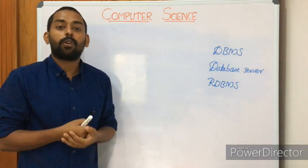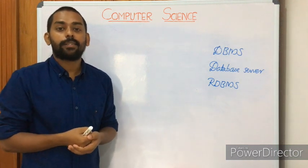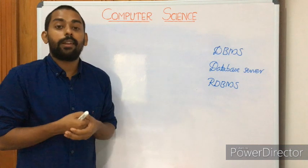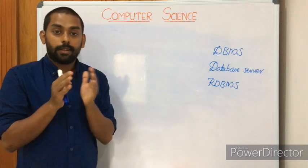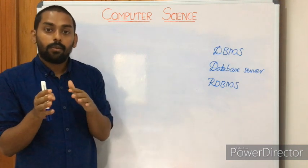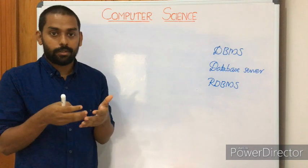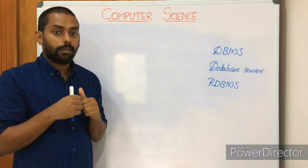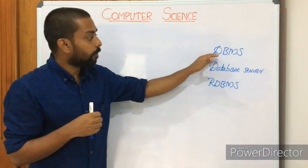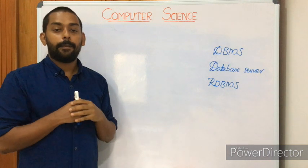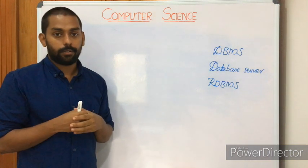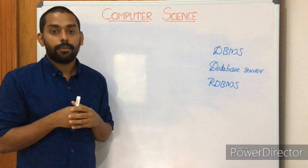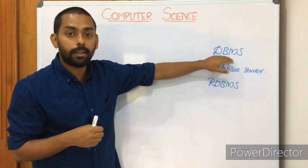Let's start with DBMS — database management system. First, what is a database? A database is an organized collection of integrated files, or simply a collection of organized files. An organized file is a group of files that are well-structured and well-arranged. When something is well-arranged, we can access it very easily. A database management system is a software package that controls the creation, maintenance, and use of a database.